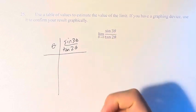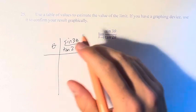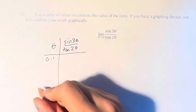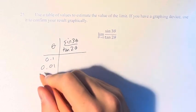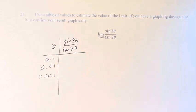So values approaching 0, first we can do from the right. So values that are larger than 0, we have 0.1, 0.01, and 0.001.